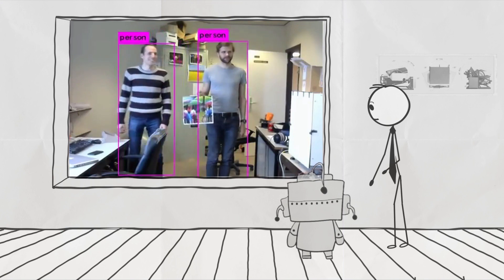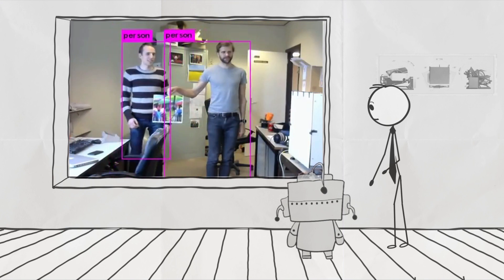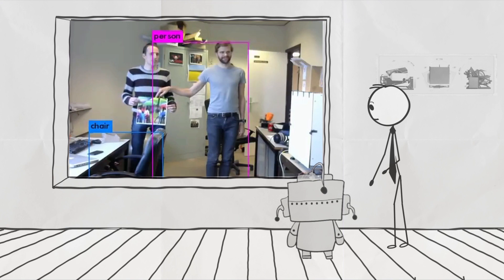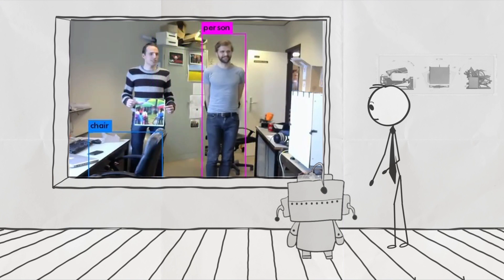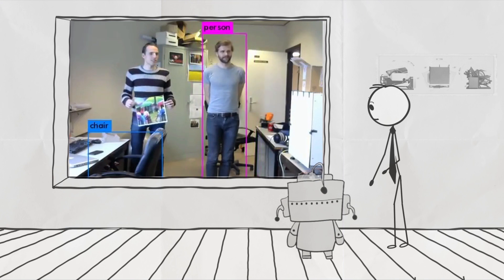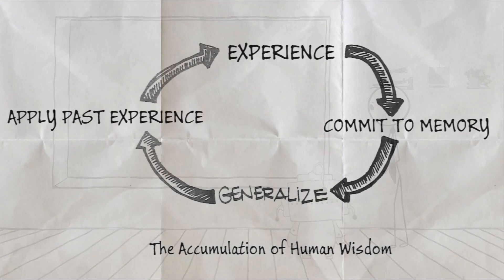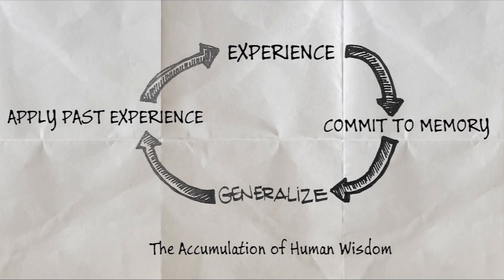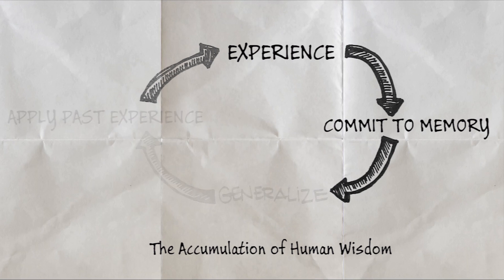Neural nets do not build models of the world. Instead, they classify patterns, and pattern recognition can fail with only small changes made to the pattern. Most important of all, unlike a human brain, AI is not good at generalizing what it learns from one situation and applying that past experience to formulate solutions to the current problem.